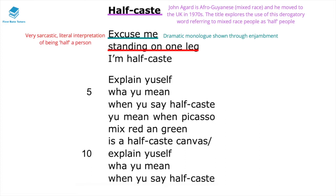In line two, he states 'standing on one leg,' and this is a really sarcastic and literal interpretation of what it means to be half a person. If he's half a person, therefore he has one leg, and so Agard is mocking this term while showing how silly it really is.